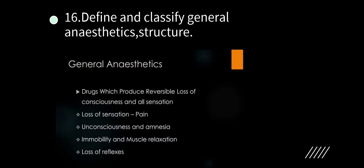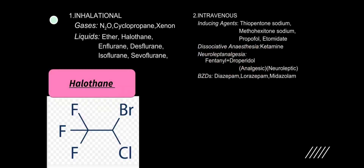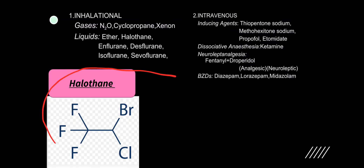Define and classify general anesthetics. General anesthetics are drugs that produce reversible loss of consciousness and all sensation — including loss of pain, unconsciousness, amnesia, immobility, and muscle relaxation. Classification: inhalation anesthetics (halothane, ether, enflurane, isoflurane) and intravenous anesthetics (fentanyl, thiopentone sodium). The structure shown is halothane as an example.